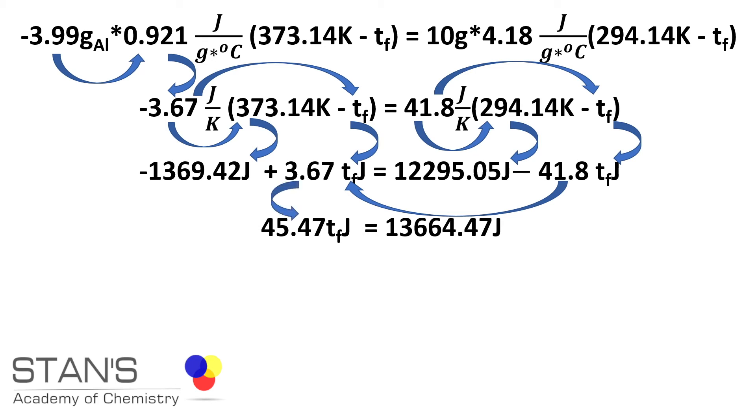Similarly, the value of energy in Joules can be moved to the right. Negative 1369.42 Joules, when taken to the right side, becomes positive. Add it up. It gives you 13664.47 Joules.